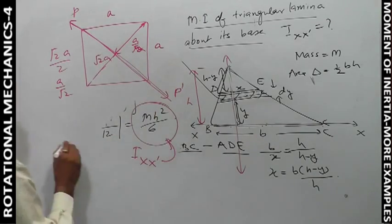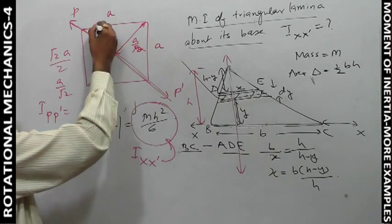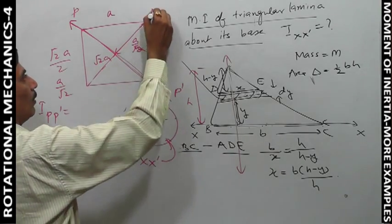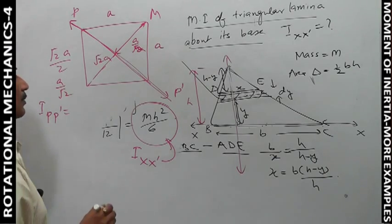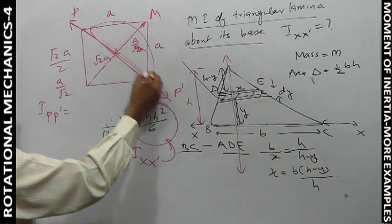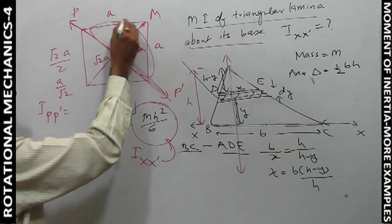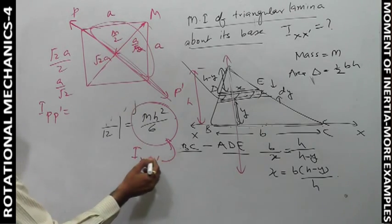If total mass is m, then each half sheet has mass m/2. So I_PP dash for the axis: if the half sheet's mass is m/2, using the formula, the moment of inertia about this axis is (m/2)h²/6.